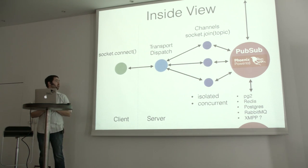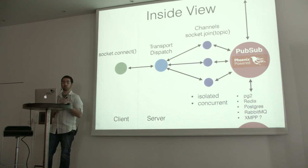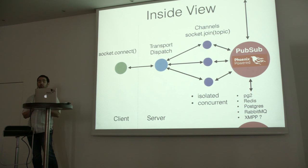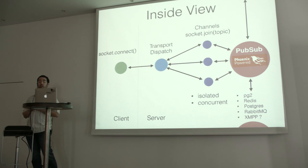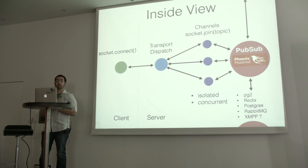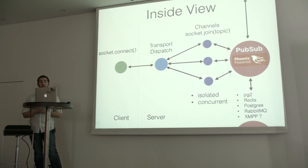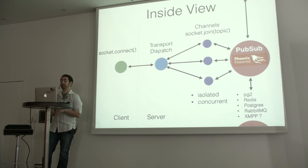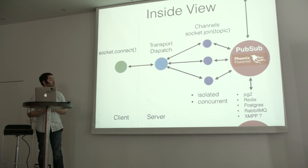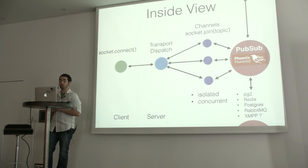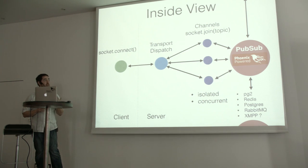On the client, I can say socket connect to create this abstracted socket connection — it could be long polling or WebSocket. I get one connection to the server and we multiplex that. You can have multiple channels running on your backend, each acting like they have their own connection to the client, but multiplexed over a single one. We dispatch at the transport level into those channels, broadcast over PubSub to other channels, then back into that single connection and send it back to the client. Our PubSub layer uses PG2, which is Erlang standard library, so if you use clustering you don't need any extra dependencies. If you're on Heroku you can add Redis for PubSub — it's a one-line change.